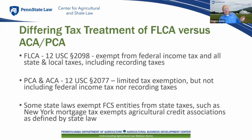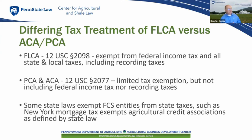Because Congress created the different farm credit system entities at different times with different laws that didn't mesh, the FLCA has different tax exemptions than the PCA and the ACA. The critical difference is that the FLCA is exempt from paying federal income tax, whereas the PCA and the ACA do have to pay federal income tax. However, they all have general exemptions from all state and local income tax. This shouldn't be confused with exemptions created by state law — for instance, New York has a mortgage tax, and there's an exemption from that created by a New York state law enacted well before 1916.